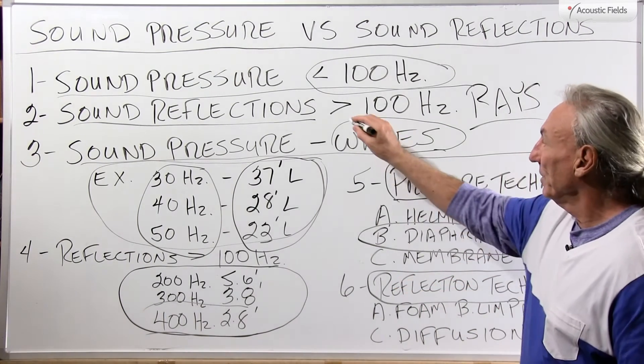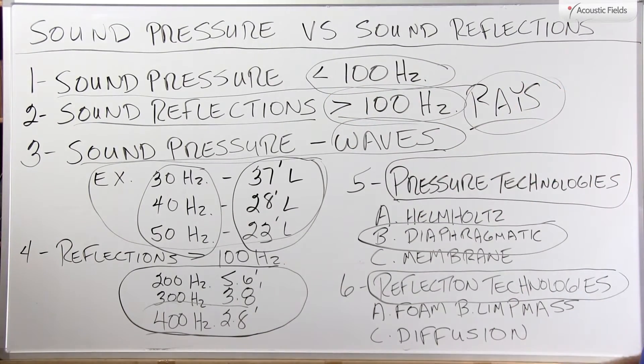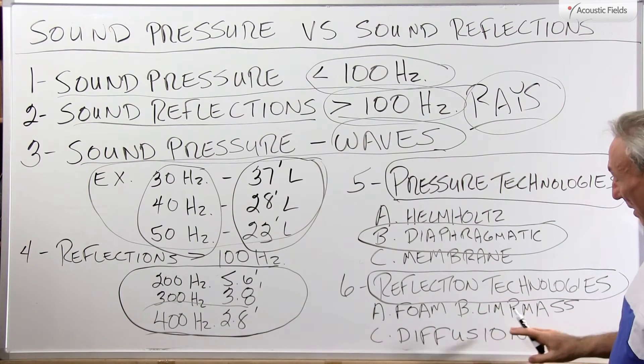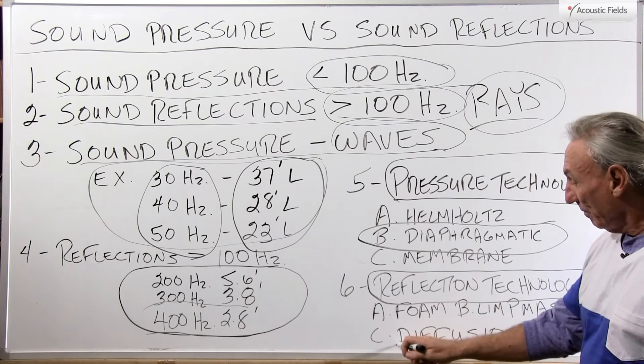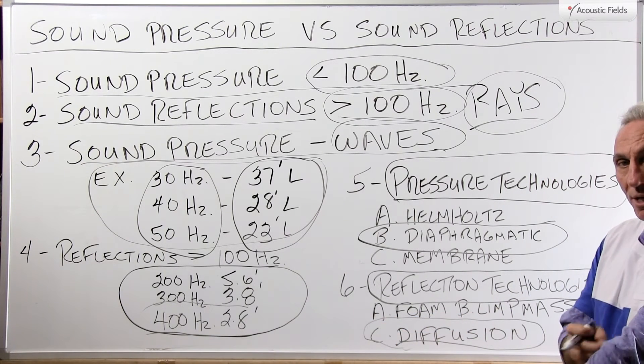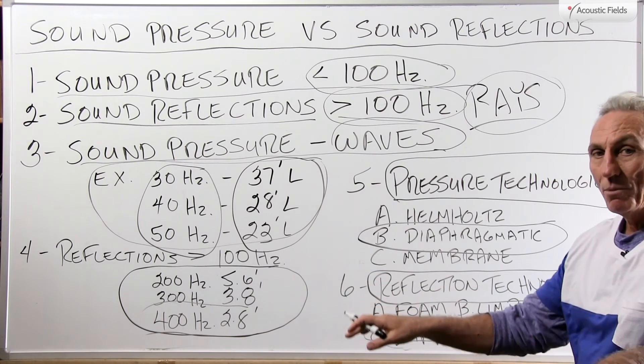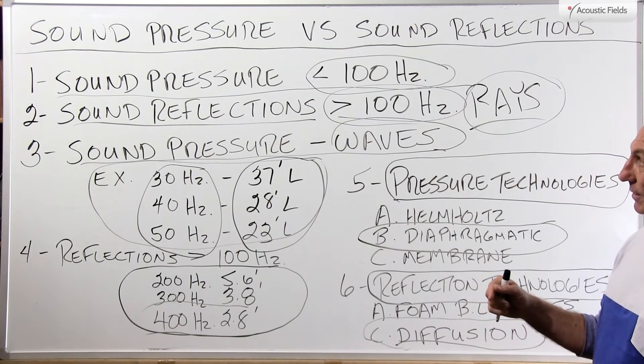Now reflection technologies - energy above 100 cycles that's ray oriented. Foam is good, limp mass curtains, things like that, building insulation, and diffusion. Don't forget about diffusion because diffusion will reduce the impact, spread it out more evenly and cause less of an issue, less of a reflection if you will from the room boundary surface.